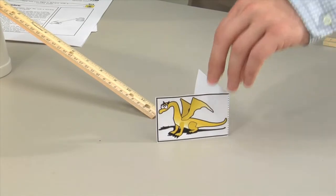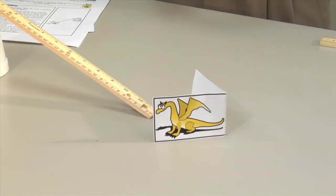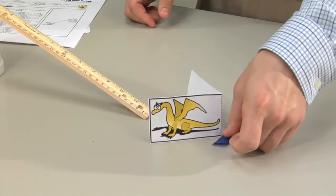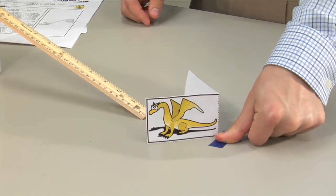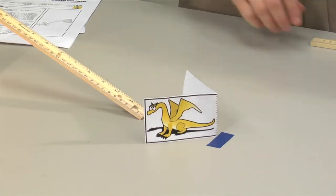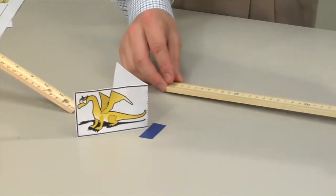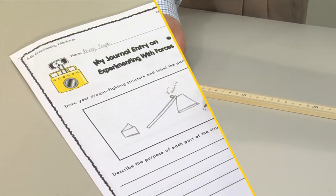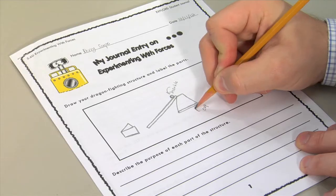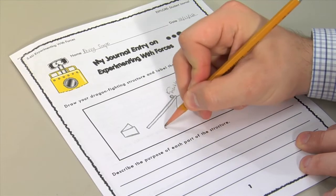Place the dragon at the bottom of the ramp and mark the table where the fold lands. This will be the dragon's start position for each trial. Use a meter stick to measure the distance traveled. Students can draw and label the parts of the ramp structure in their journals.